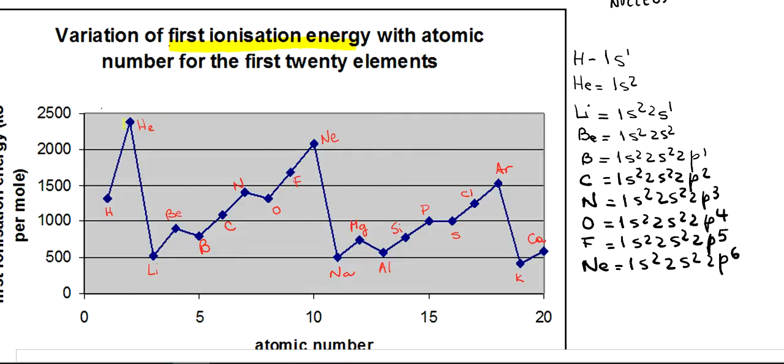You can see that the noble gases, which are helium, neon and argon, have a very high ionization energy. Why is that? Because helium, neon and argon have the octet complete.